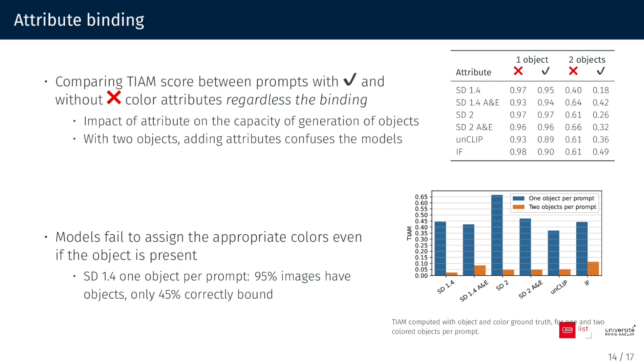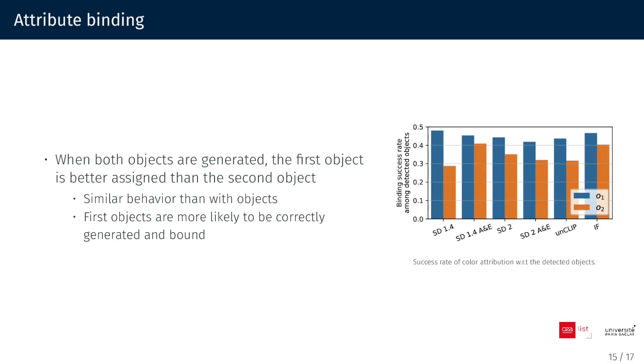We then extend the TIAM score computation to include both attribute binding and catastrophic neglect. We observe that the models fail to assign the appropriate colors, even when the object is present. In addition, we observe that the first object is better assigned than the second. The first object is more likely to be correctly generated and bound than subsequent objects in the prompt.